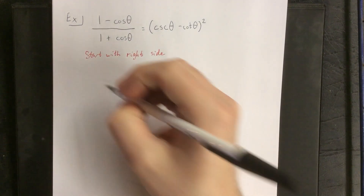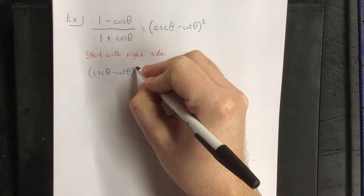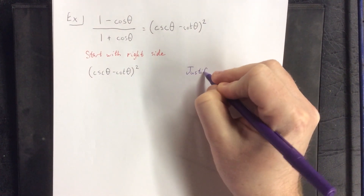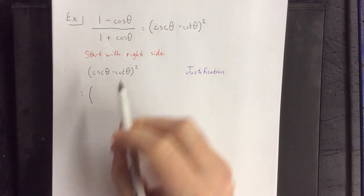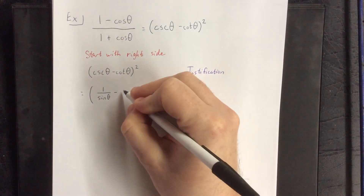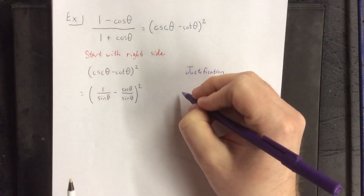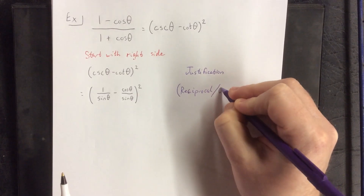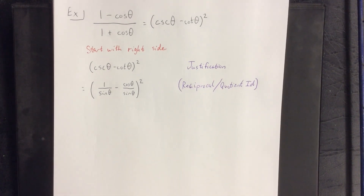I'm going to recopy the right hand side: the cosecant of theta minus the cotangent of theta, quantity squared. To the right I'll give justifications for each step. First, I'll express everything in terms of sine and cosine. Using a reciprocal identity, cosecant is 1 over sine of theta; using a quotient identity, cotangent is cosine of theta over sine of theta. The justification for this step uses a reciprocal as well as a quotient identity, which is typical when getting things in terms of sine and cosine.